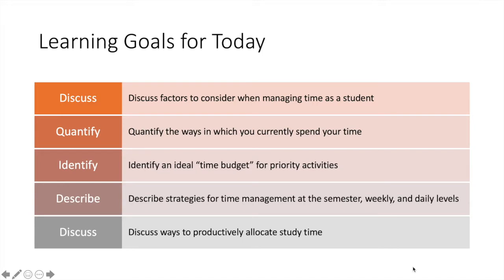Here are our learning goals for today. We're going to discuss factors to consider when managing time as a student. We'll quantify the ways in which you currently spend your time — in other words, see where your time is going. We'll identify an ideal time budget, describe strategies at the semester, weekly, and daily levels, and discuss ways to productively allocate study time.